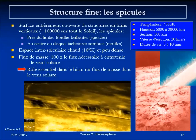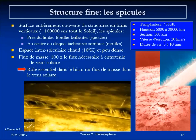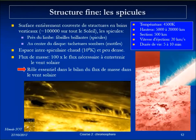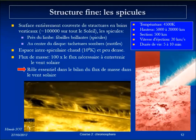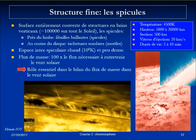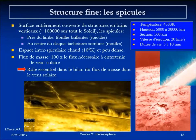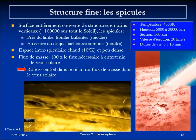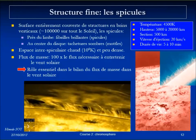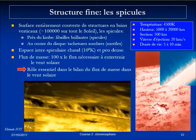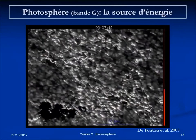Between those jets, what looks dark is actually very hot material from the corona — the next higher layer in the solar atmosphere. When summing up the amount of matter injected in those spicules, you end up with 100 times the flux necessary to sustain the solar wind, which is the expansion of the outer corona and also a loss of matter from the Sun. Most of the matter that's injected actually falls back on the Sun in a ballistic trajectory.